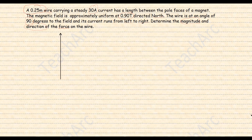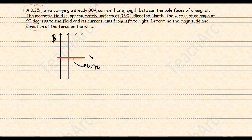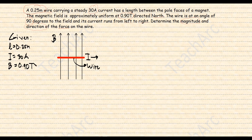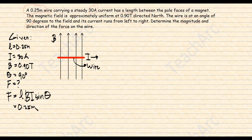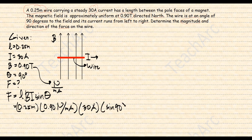First, we draw a diagram showing the given quantities to get a better understanding of the problem. We have the direction of the magnetic field, which is to the north, and the current is to the right. The length of the wire is 0.25 meters, the current is 30 amperes, the magnetic field is 0.90 tesla, and the angle between the current and the magnetic field is 90 degrees. Using the formula F equals L times B times I times sine theta, and noting that tesla equals newton per meter ampere, we can eliminate all units, leaving us with newtons. So the magnitude of the magnetic force is 6.75 newtons.